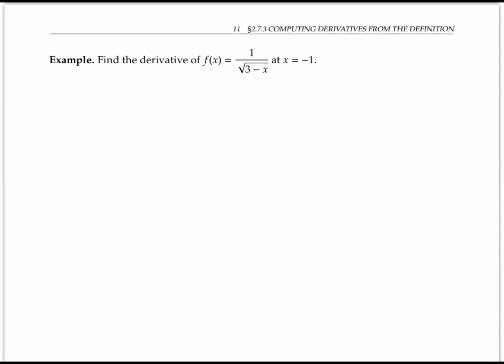First example: find the derivative of f of x, which is one over the square root of three minus x, at x equals negative one.